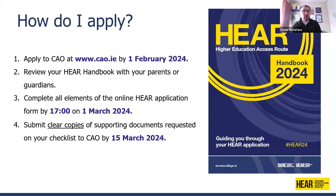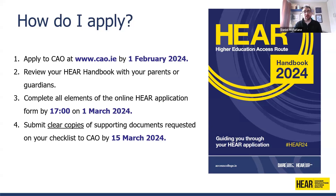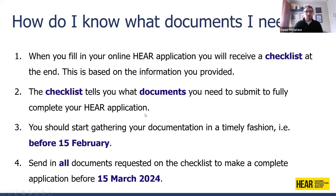How do you apply? You need to apply via the CAO, working through the handbook at home with your parent or guardian. Make sure everyone understands what's being asked. You need to complete all online HEAR applications by the 1st of March 2024 at 5pm, and then send clear copies of your supporting documents — as listed on your checklist — to reach the CAO by 15th March 2024.